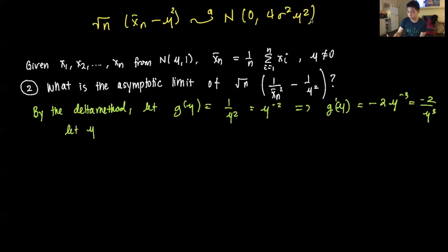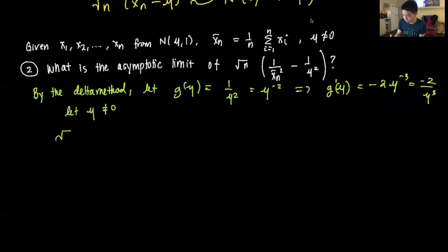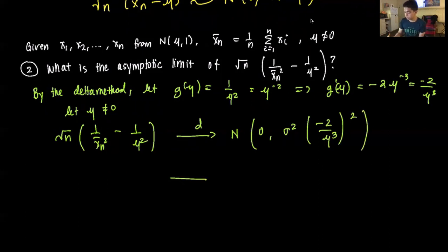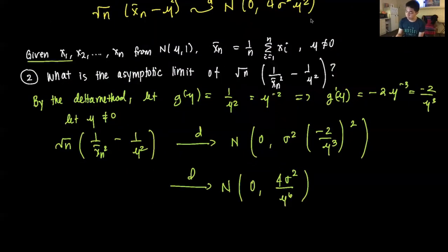We assume μ ≠ 0 so the denominator is not zero and the derivative is well-defined. In another video we'll explore the case where μ = 0 using a second-order Taylor approximation, but for now we assume that's not the case. So √n · (1/x̄ₙ² - 1/μ²) converges in distribution to a Normal with mean 0 and variance σ² · (-2/μ³)² = 4σ²/μ⁶.